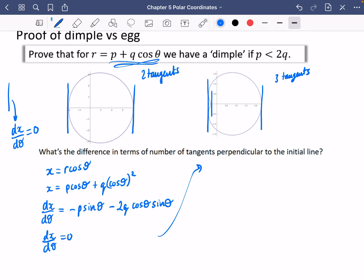So what I'm going to do now is I'm going to say that minus p sin θ minus 2q cos θ sin θ is equal to zero. Obviously, we can factor out the sin θ. I'm in fact going to do a minus sin θ. So I get p plus 2q cos θ equals zero. So either sin θ equals zero or cos θ equals minus p over 2q.